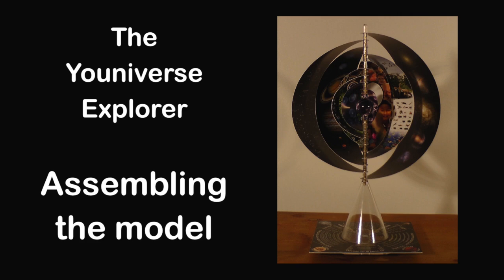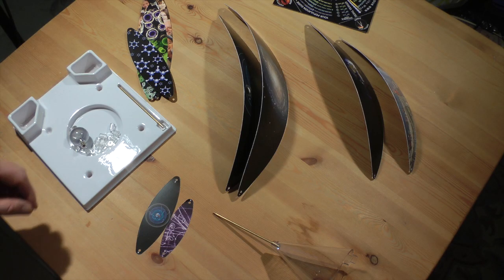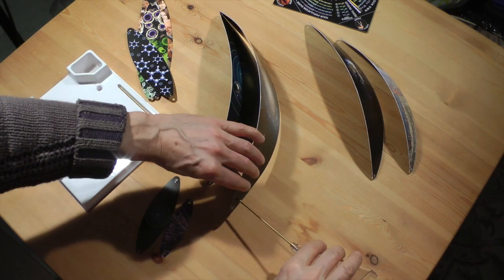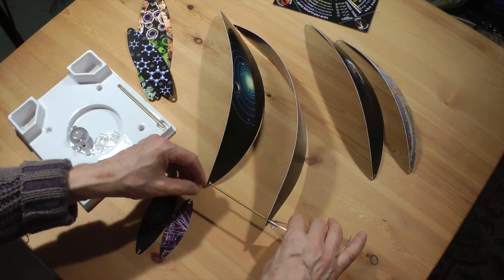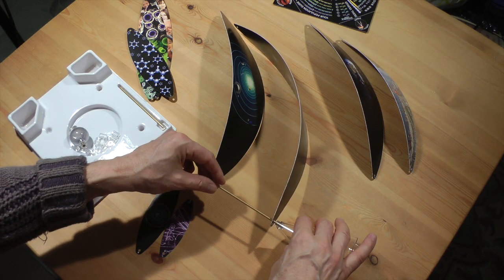So this is instructions for assembling the model. First you start by threading the number one layer asterisk down onto the rod attached to the cone, and then you put a plastic spacer on.